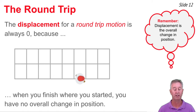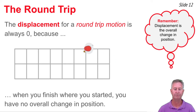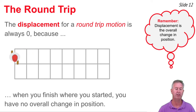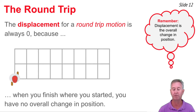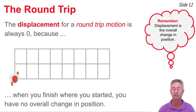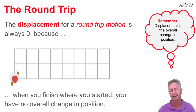Now let's look at a round trip motion. This person walks 8 meters east, 2 meters north, 8 meters back west, and 2 meters south, finishing where they started. This is what we mean by round trip motion. When you finish in exactly the same position you started from, you have not had any overall change in position — you've not been displaced from the original position. We can say that the displacement for any round trip motion is always zero.